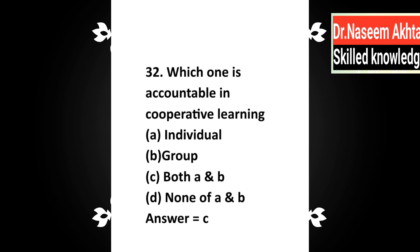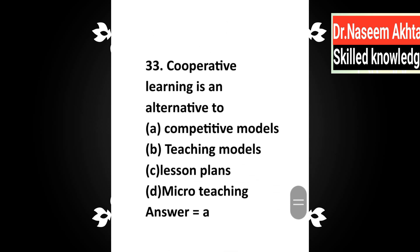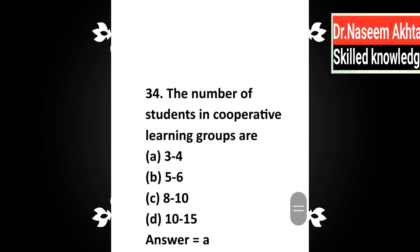Question 32: Which one is accountable in cooperative learning — a) individual, b) group, c) both A and B, d) none of A and B? Correct answer is C: both A and B. Question 34: Cooperative learning groups are — a) 3 to 4, b) 5 to 6, c) 8 to 10, d) 10 to 15. Correct answer is A: 3 to 4.